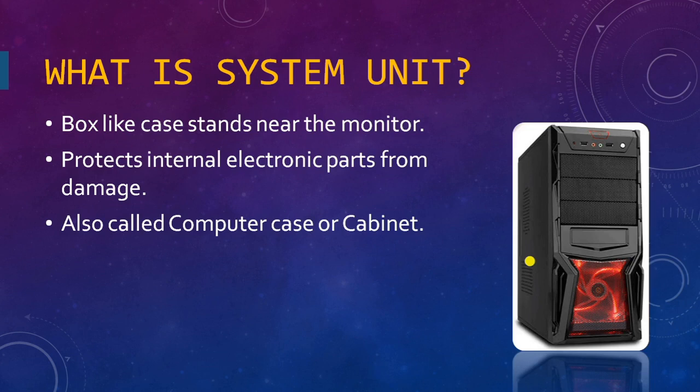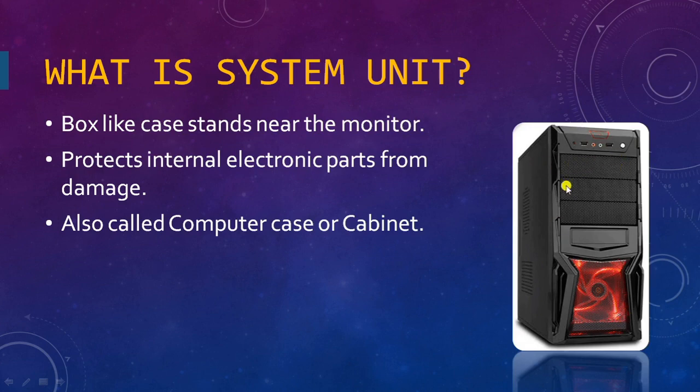The system unit is a box-like case which can be placed near the monitor, above the table, or under the table — wherever is compatible for us. It protects the internal electronic parts from damage because it is totally covered from all sides, so whatever parts are inside get protected by this cover or case.